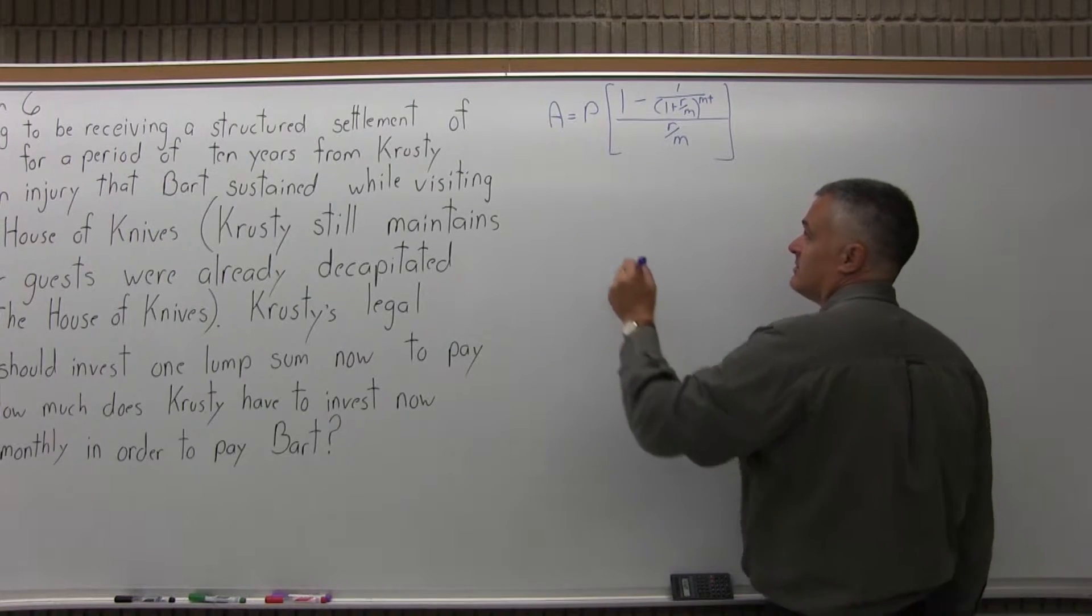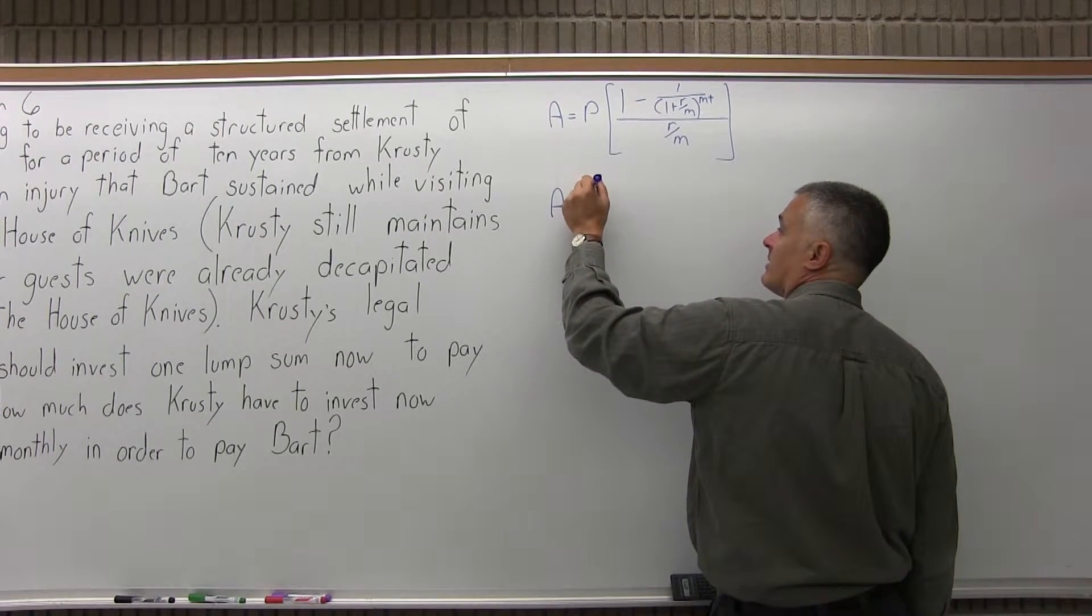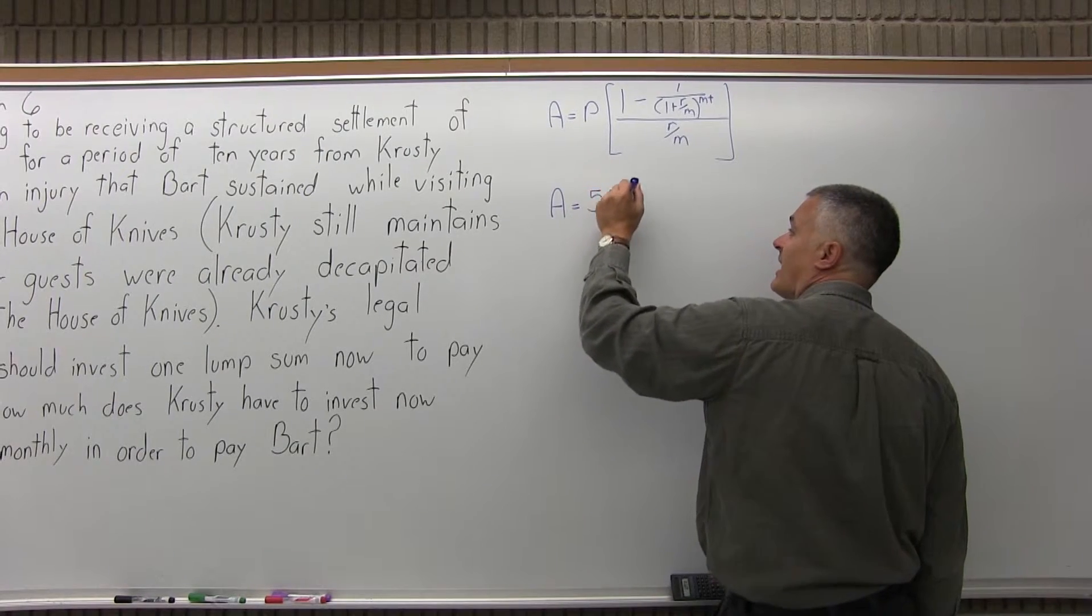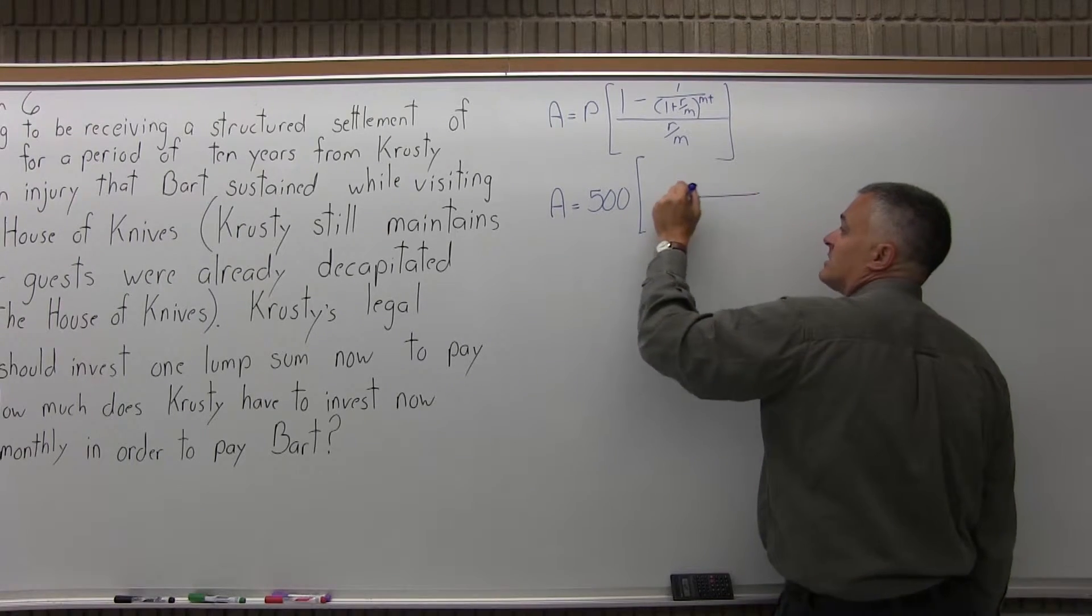So to fill this out, we have A, the final lump sum, equals P, the regular payment, which for this problem is $500. That's what Bart's going to be getting every month, times the brackets.